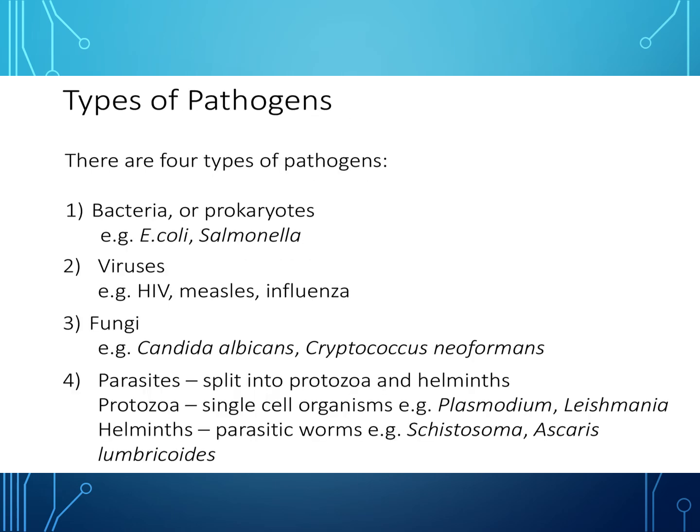There are four types of pathogens: bacteria or prokaryotes — some examples are E. coli and salmonella. The most dangerous type of E. coli is a version called E. coli O157. Viruses such as HIV (human immunodeficiency virus), measles, and influenza which is another name for flu.